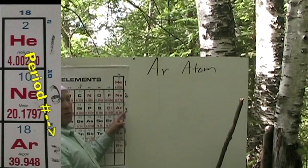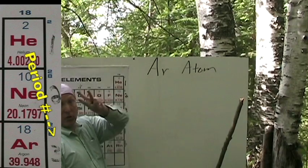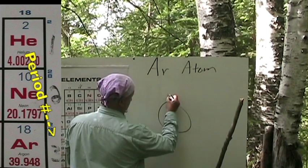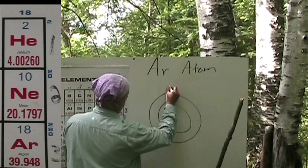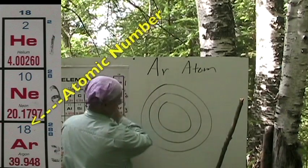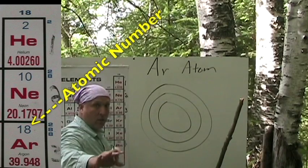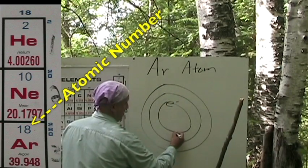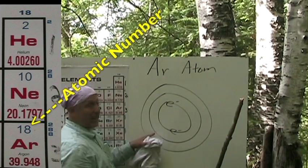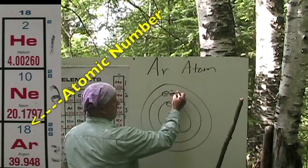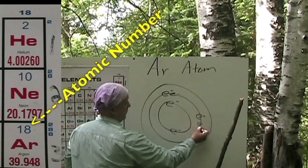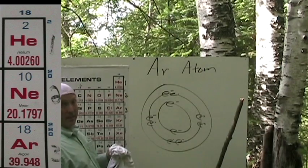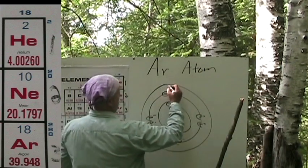Argon atom. Argon is in period number three, so we know we need three energy shells. Let's fill in our electrons — two on the inner shell. Then the next shell is eight, and then the next shell after that is eight, up to eight again.